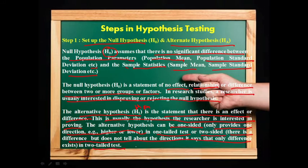The alternate hypothesis is of three types. If H0 is represented by an equal-to sign, then HA or H1 is represented by: a not-equal-to sign in a two-tailed test, a greater-than sign in a right-tailed one-tailed test, and a less-than sign in a left-tailed one-tailed test.